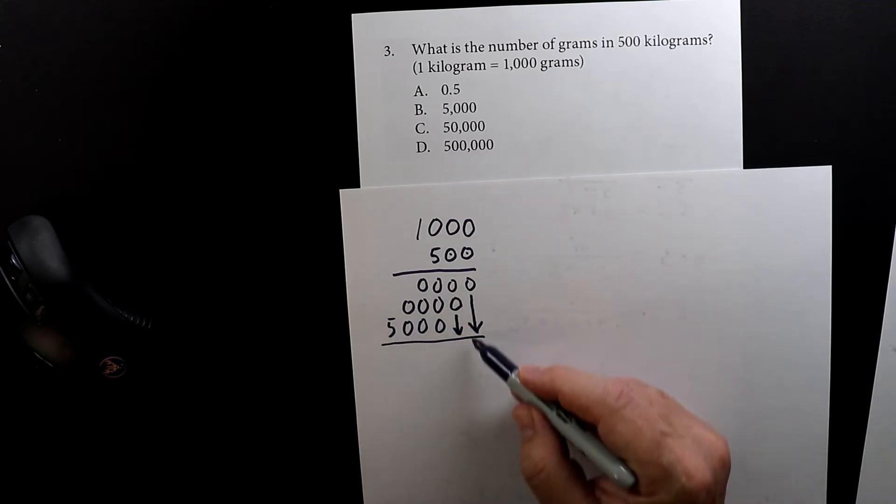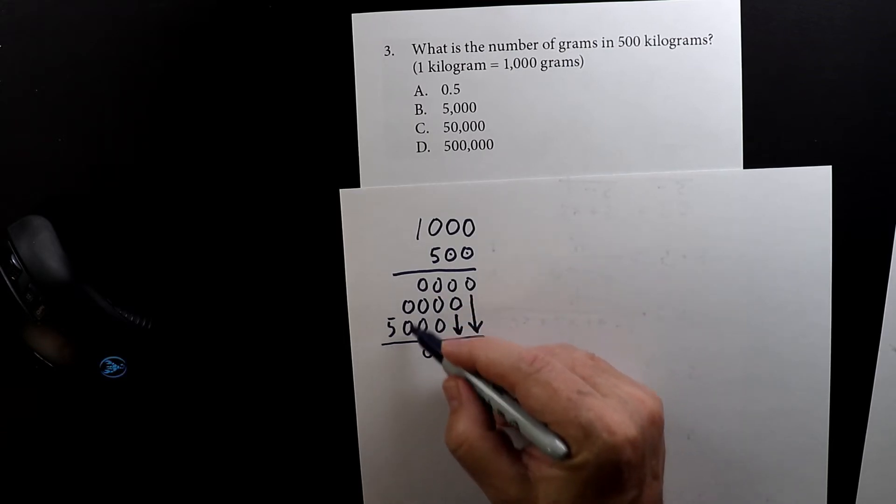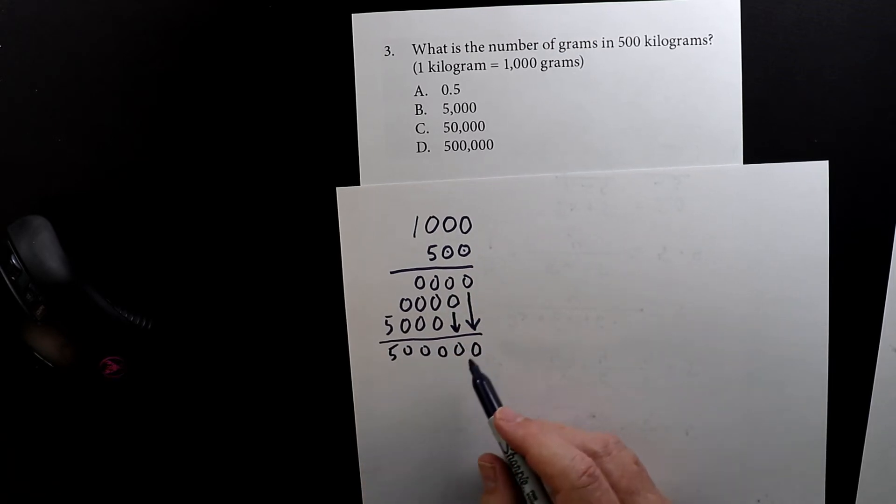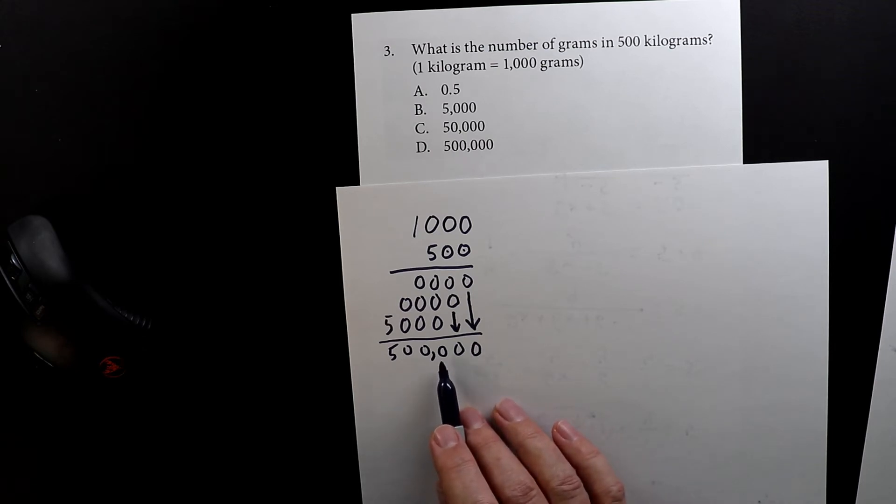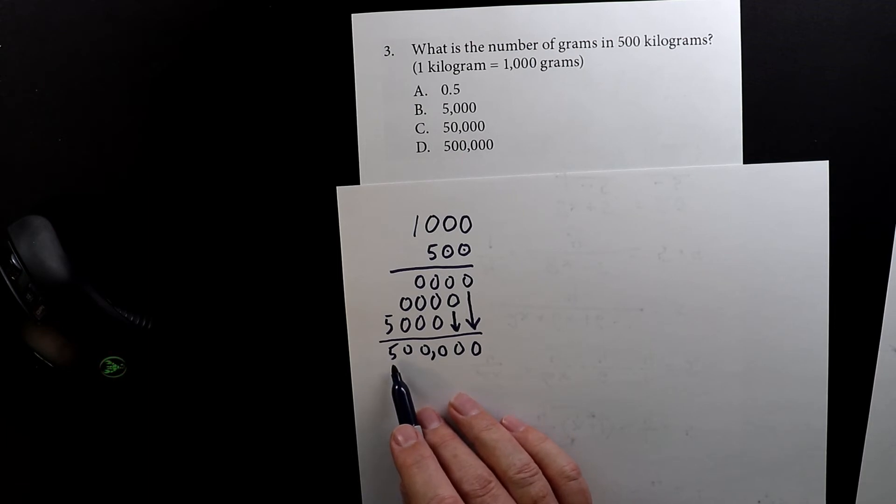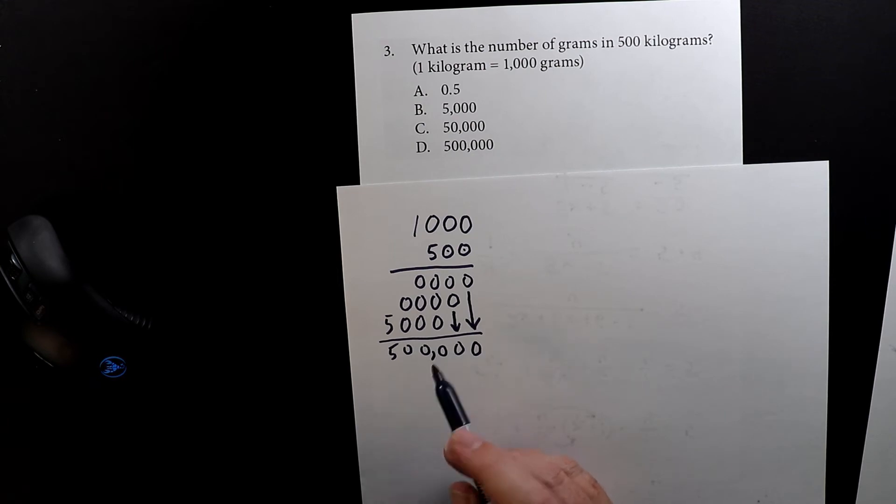So this is the trickiest math that we've done so far—five times one. Now I have my columns nice and neat, so watch all these zeros come down. If you remember using commas, every time you have three numbers you put a comma there. So we go from ones, tens, hundreds, thousands, ten thousands, hundred thousands. So five hundred times a thousand is five hundred thousand, or one half million.